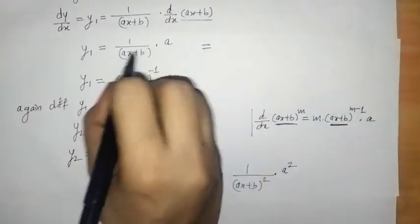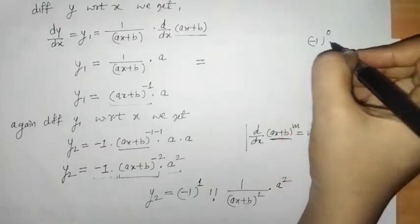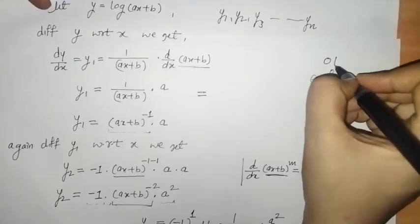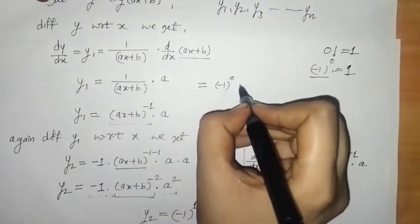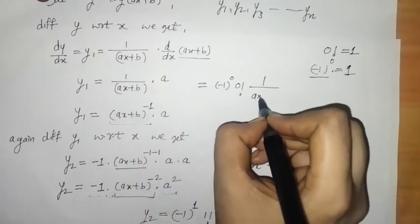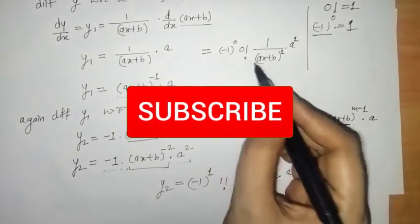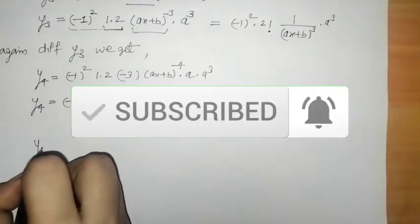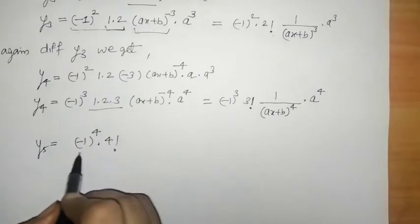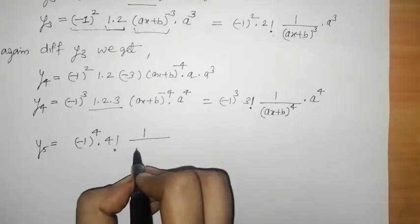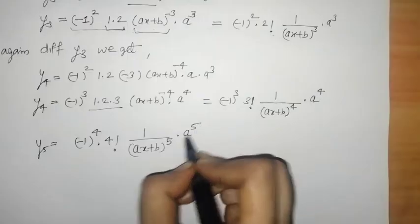Checking y1: here we can write minus 1 raised to 0, and 0 factorial equals 1. So for y1 we have minus 1 raised to 0, times 0 factorial, times 1 upon ax plus b raised to 1, times a raised to 1. By observing all of these, we can write y5: minus 1 raised to 4, times 4 factorial, times 1 upon ax plus b raised to 5, times a raised to 5.